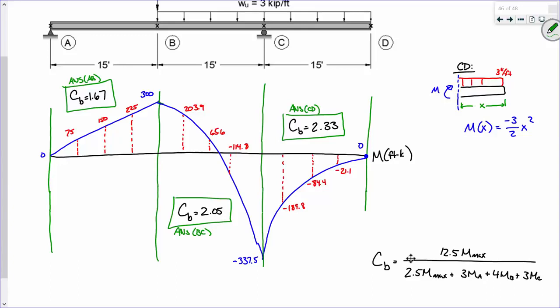So for segment A, B, your M_A, M_B, M_C are 75, 150, and 225, respectively, all in foot-kips.